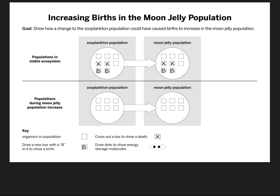When you're using your modeling tool, you are just writing x's and b's. There's a little key: if the organism gives a birth, we'd have a b; if the organism dies, we have an x. We want to show what happens to the organisms. At the top it says the population in the stable ecosystem — so this was before 2000. The zooplankton population had about the same births as deaths, so the population would be stable. That would cause the moon jellies to have about the same amount of food, so they had about the same number of deaths as births.